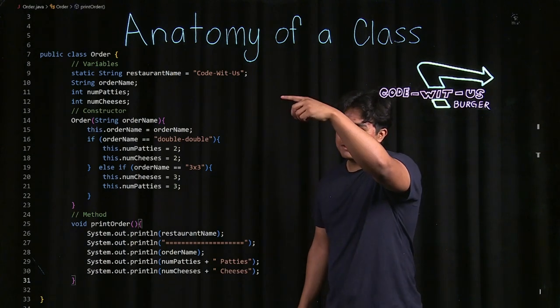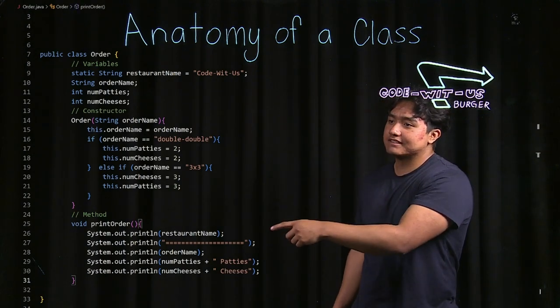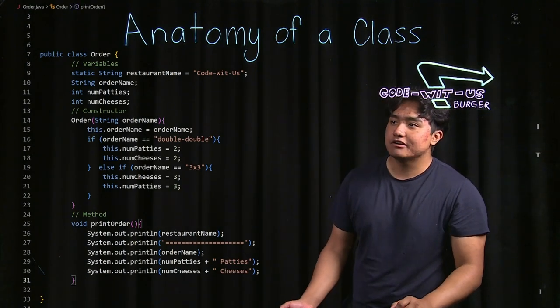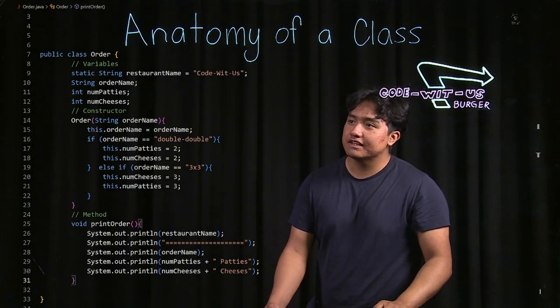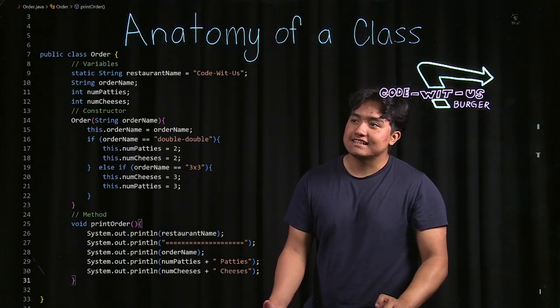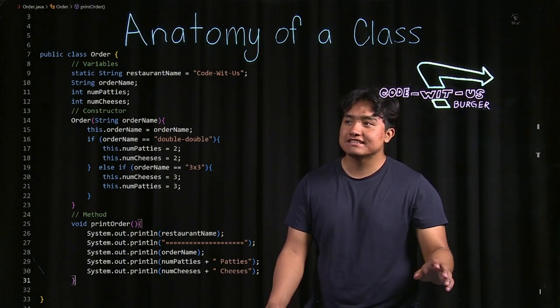So now we have our variables, our constructor, and the methods. So let's talk about our variables. On the first line we see restaurant name and if you pay close attention you can see that there's a static keyword there, and that pretty much indicates that this is a class variable shared by every instance of the class.